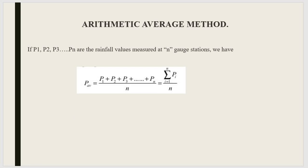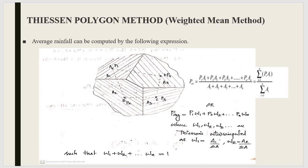The second method is the Thiessen polygon method. This method is a very common method of weighing the rain gauge observations according to the area. It is also known as the weighted mean method, and it is more accurate than the arithmetic average method. In the diagram, you can see a catchment or basin with four different rain gauge stations: A, B, C, and D.